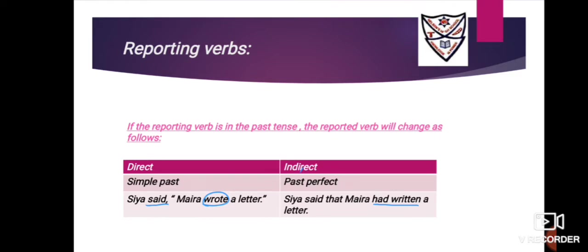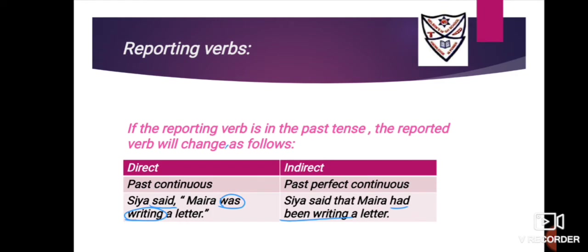Next category: what if the reported verb is already in the simple past tense? If the reported verb is in simple past, it goes into past perfect. Example: 'Siya said, Myra wrote a letter.' Underline 'said,' circle 'wrote.' Because the reporting verb is 'said,' 'wrote' (simple past) changes to 'had written' (past perfect). Answer: 'Siya said that Myra had written a letter.'